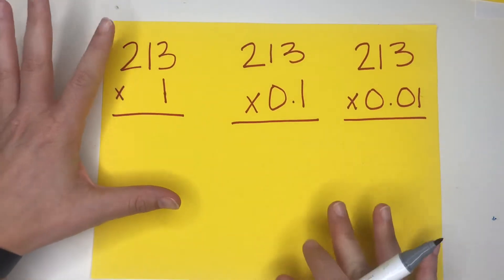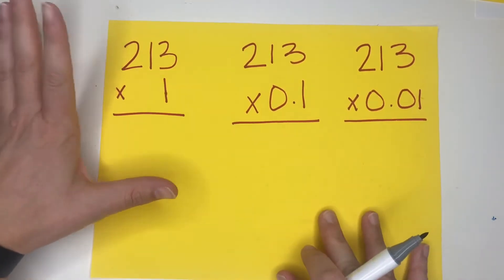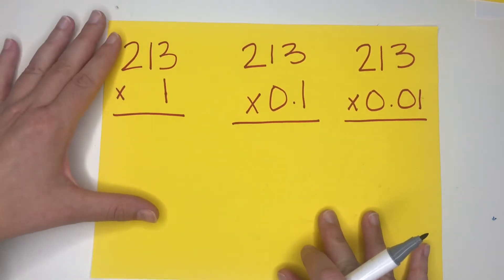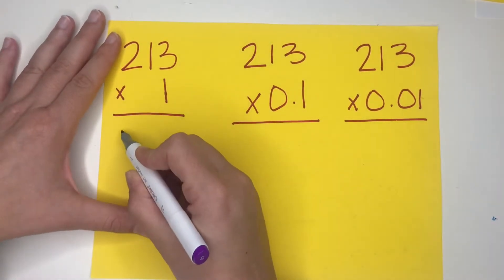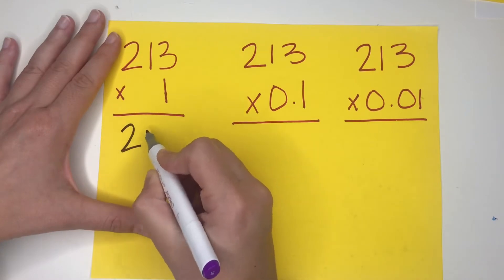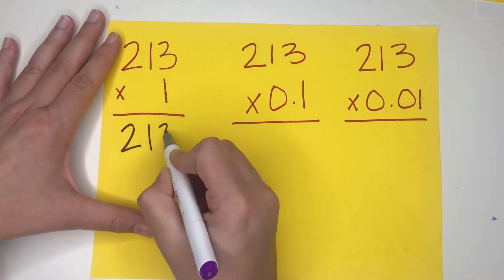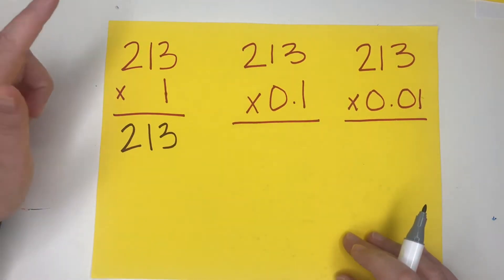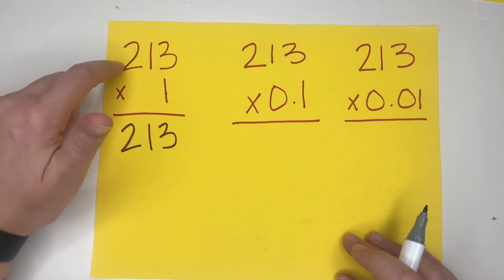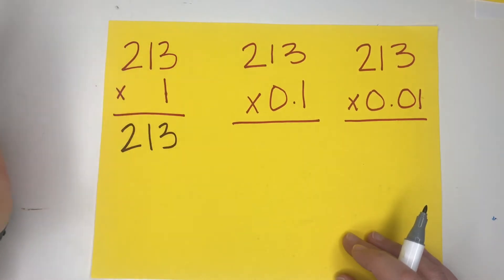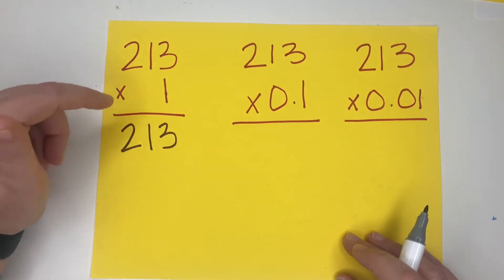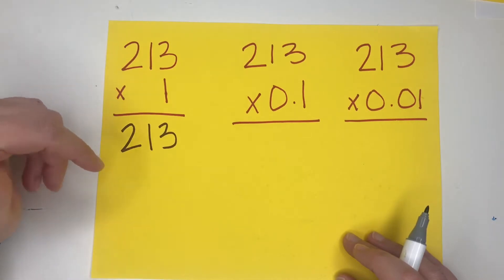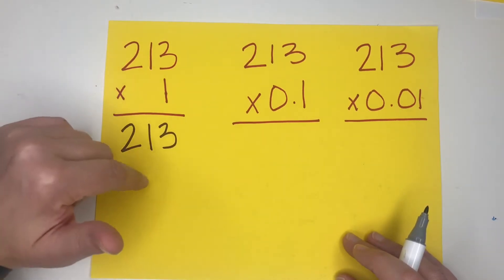We're going to start with a very simple multiplication problem. Let's start with 213 times 1. You're right, it's super easy — it's simply 213, because anything times 1 is that number. You can multiply into the millions with 1 and simply know that it is the same number again.